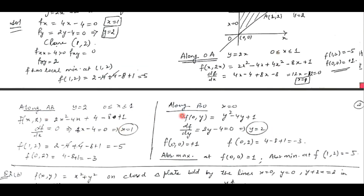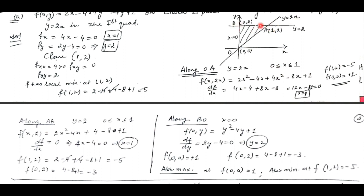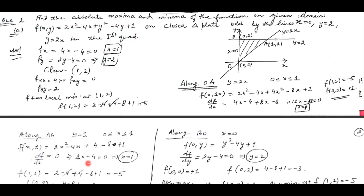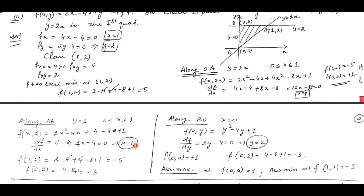Similarly along AB and along BO. Along AB, the equation of the line is y = 2 and x varies from 0 to 1. We substitute y = 2 in the main function, convert it to a function of x, take its derivative, find the interior point, and evaluate at the end points. From all these values, we observe that the function has maximum value of 1 at (0, 0), which is the absolute maxima, and minimum value of -5 at (1, 2), which is the absolute minima.